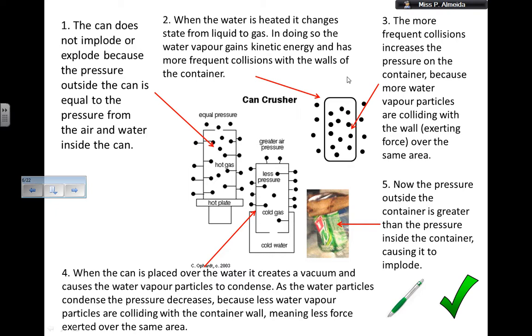Then, when you put the can in the cold water, it creates a vacuum. This is because you suddenly get less pressure. So, these gas particles are going to get closer together. So there are spaces where there are no gas particles anymore because the place where they were using is not being used anymore. The pressure decreased. So it creates a vacuum and it causes the water particles to condense. As the water particles condense, the pressure decreases because less water vapor particles are colliding with the container wall, meaning less force exerted over the same area. Now, number five, the pressure outside the container is greater than the pressure inside the container, causing it to implode.